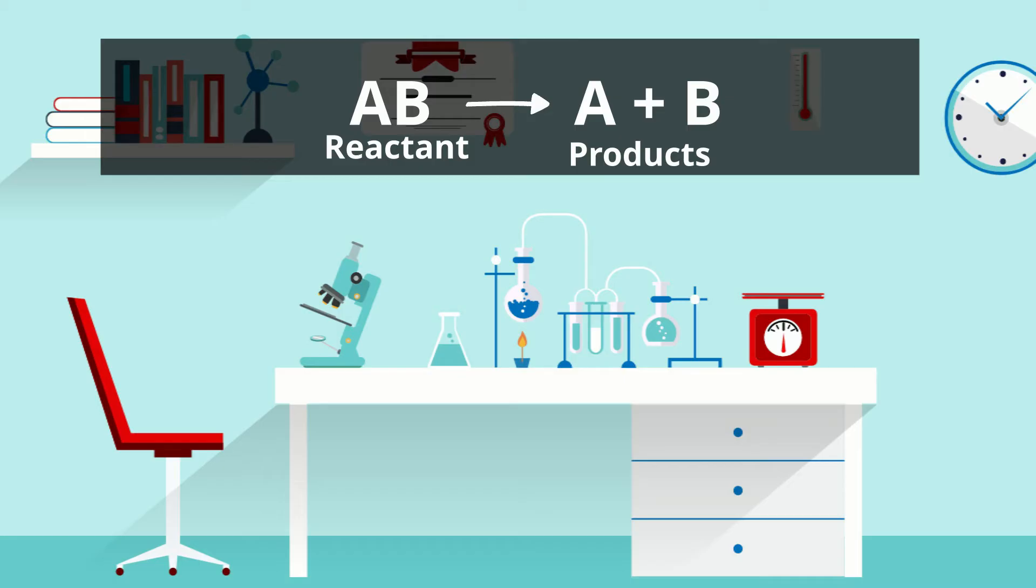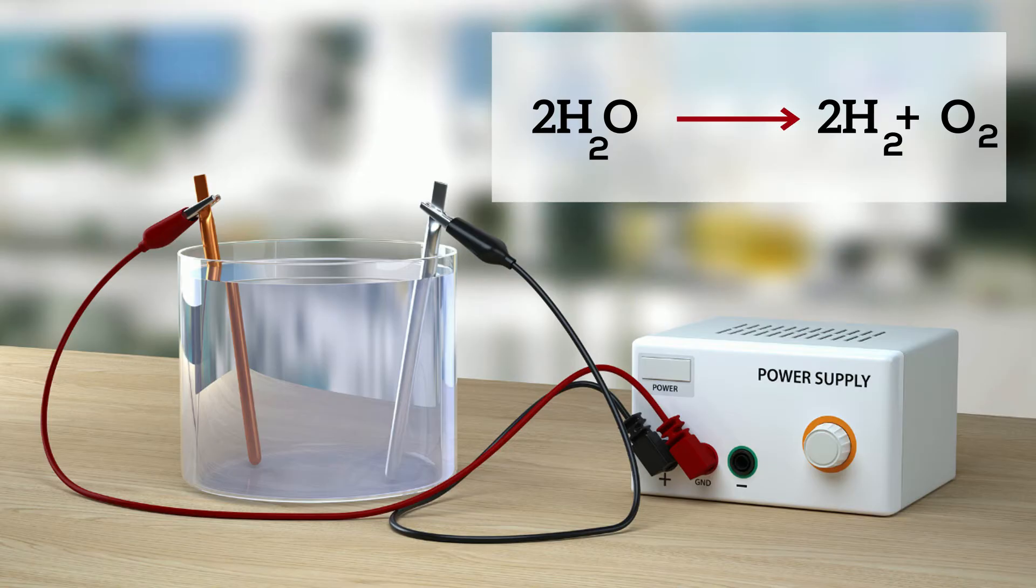If you pass an electric current through water, it will cause water to decompose. This would be an example of a decomposition reaction. The water breaks down to produce hydrogen and oxygen gases. And here's the equation.